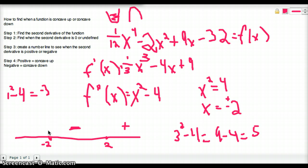And then we're going to do it again with the number less than negative 2. So we're going to do negative 3. So negative 3 squared minus 4, it's going to be 5. So that's going to be positive for all values less than 2, negative between negative 2 and 2, and positive greater than 2.